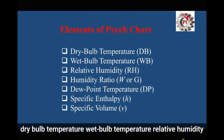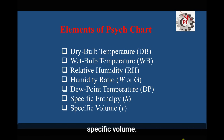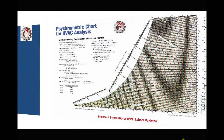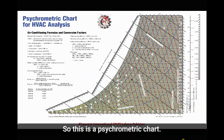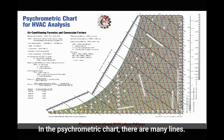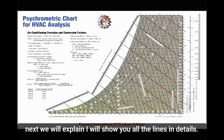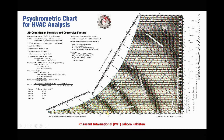In the psychrometric chart we will see the air properties: dry bulb temperature, wet bulb temperature, relative humidity, humidity ratio, dew point temperature, specific enthalpy, and specific volume. The psychrometric chart has many lines which we will explain in detail.